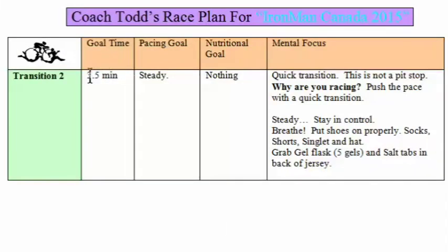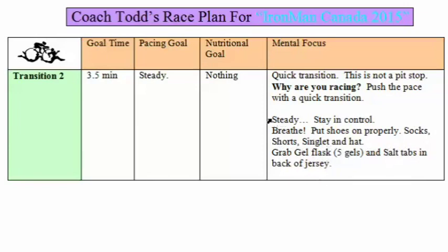After the bike, T2. Goal time is 3.5 minutes. Pacing goal: steady, don't rush. Nutritional goal: water if offered, that's about it. Mental focus: quick transition — remind myself why I'm racing, push the pace. I'll change into socks, shoes, shorts, singlet, and hat — a full change into fresh clean clothes. I'll grab my gel flask with five gels and add a new supply of salt tabs to the back of my jersey. Key: stay steady, stay in control, remember to breathe.